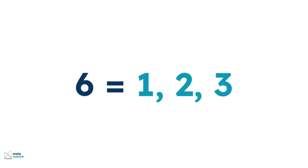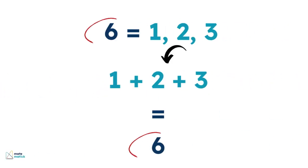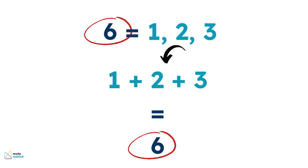For example, let's consider the number 6. Its proper divisors are 1, 2, and 3. If we add these together, we get 6. Since the sum of its proper divisors equals the number itself, 6 is a perfect number.